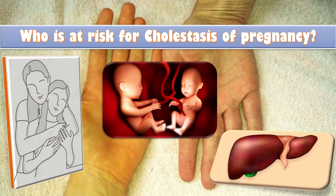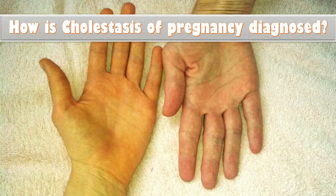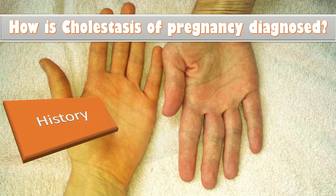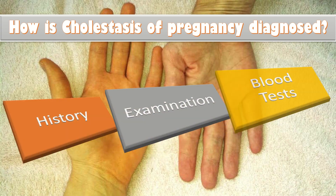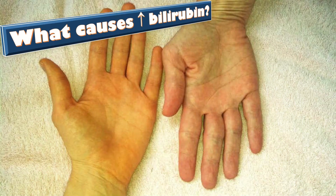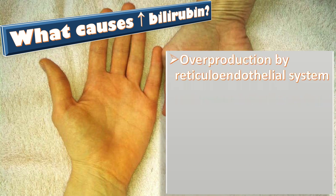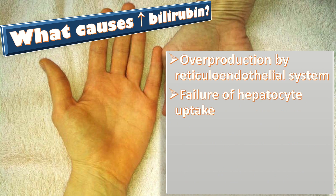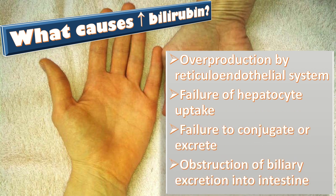Cholestasis of pregnancy is diagnosed by complete medical history, physical examination, and blood tests that evaluate liver function, bile acids, and bilirubin. Increased bilirubin is due to overproduction by the reticuloendothelial system, failure of hepatocyte uptake, failure to conjugate or excrete bilirubin, or obstruction of biliary excretion into the intestines.